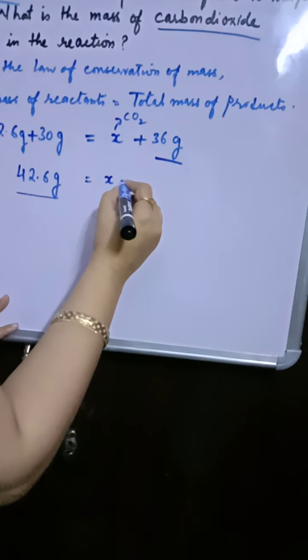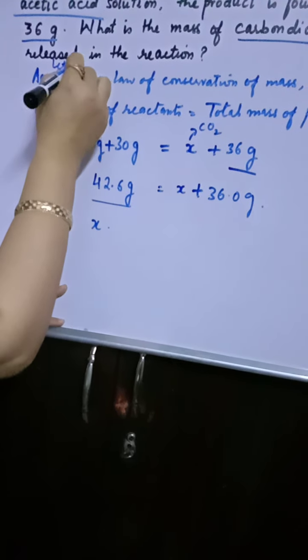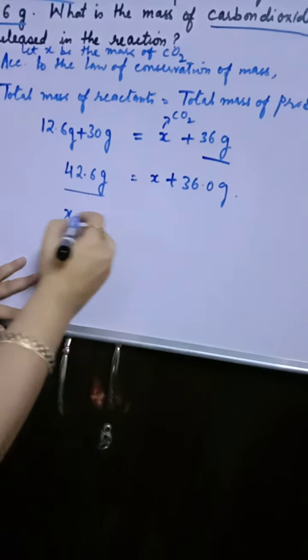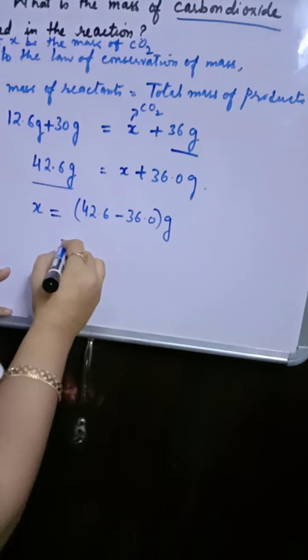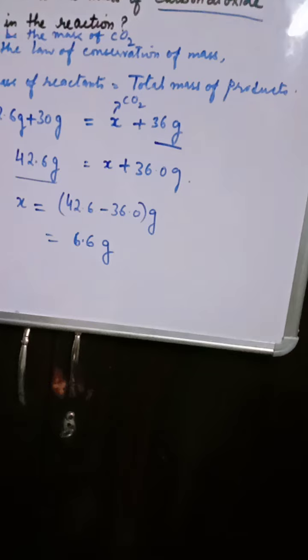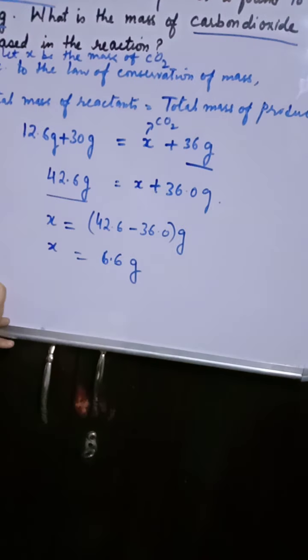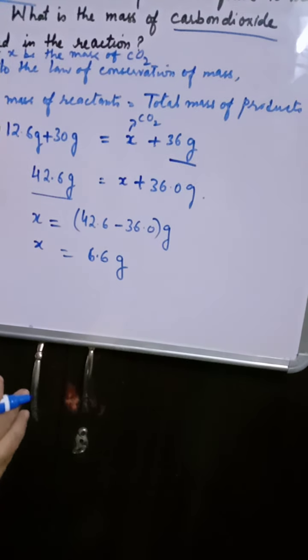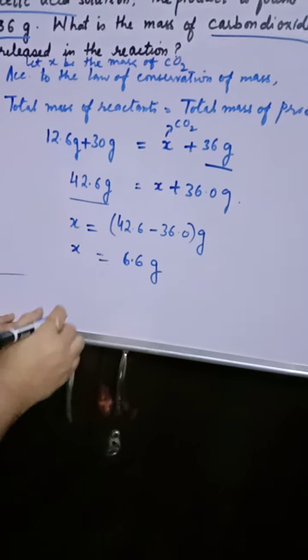Toh aap likhenge x plus 36 gram. So x yahaan par aap assume kar sakte hain, let x be the mass of carbon dioxide. So x is equal to what? 42.6 minus 36 gram. Yeh kitna aa jayega aapko? So the answer will be 6.6. Toh aap kya kahenge? The mass of carbon dioxide released in the reaction last me likh dena hai. Kabhi bhi aise equations mad chhoda kariye. Last me aapne bas x likh diya. Last me jo ending statement hota hai, wo zaroor likha kariye, jo question me poocha gaya hai. Therefore, the mass of carbon dioxide released in the reaction will be equal to 6.6 gram.